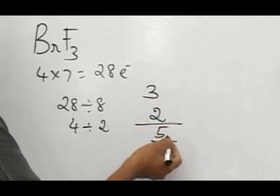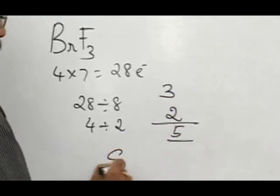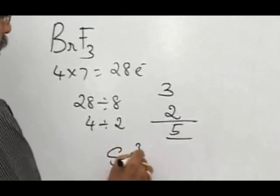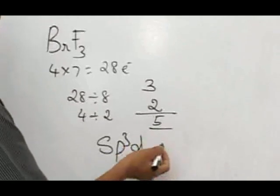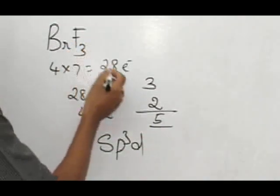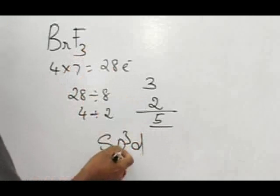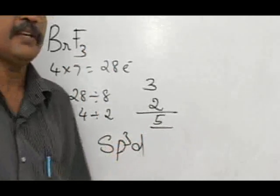So 5 hybrid orbitals are obtained in sp3d hybridization, so sp3d hybridization leads to 5 hybrid orbitals, therefore in BrF3, the central atom is in sp3d hybridized state.